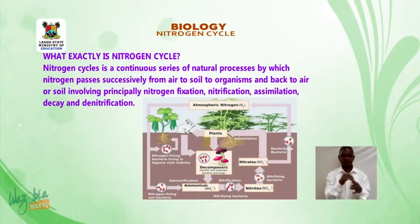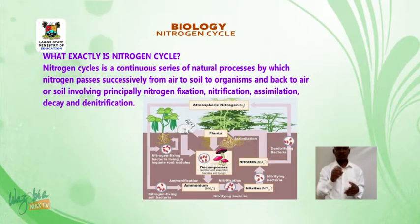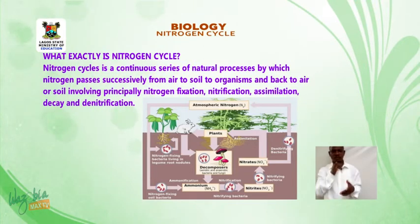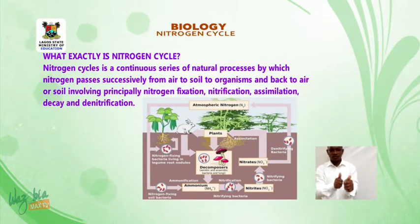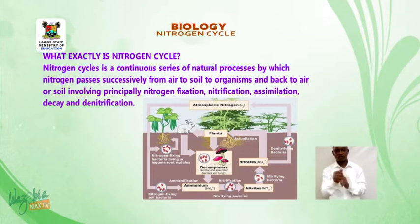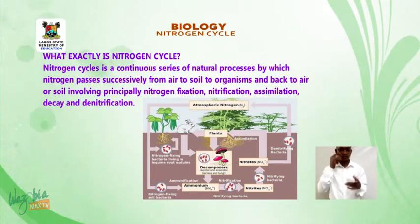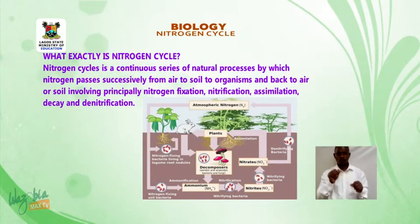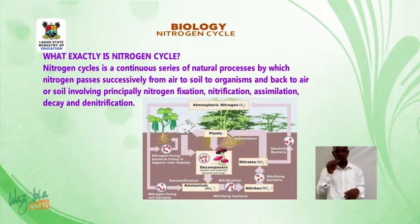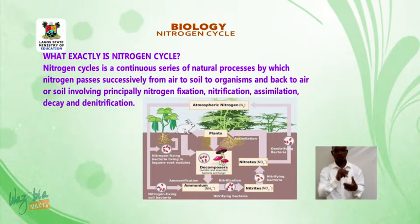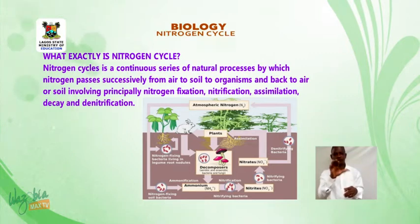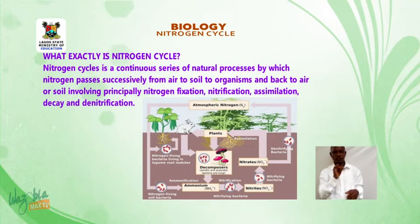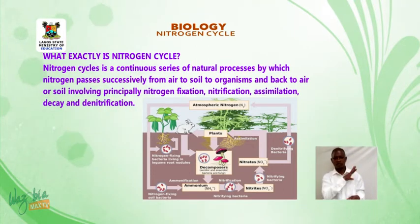What exactly is the nitrogen cycle? The nitrogen cycle is a continuous series of natural processes by which nitrogen passes successively from air to soil, to organisms and back to air or soil, involving principally nitrogen fixation, nitrification, assimilation, decay, and denitrification.